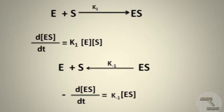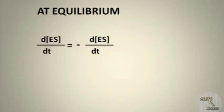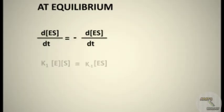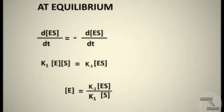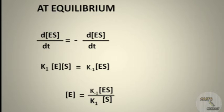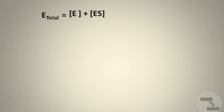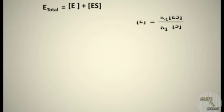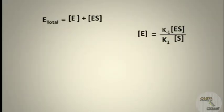At equilibrium, we can write d[ES]/dt equals minus d[ES]/dt, so k1·[E]·[S] equals k minus 1·[ES]. Then we can write [E] equals k minus 1·[ES] divided by k1·[S]. We also know that E total equals the concentration of free enzyme [E] plus the concentration of the enzyme-substrate complex [ES].